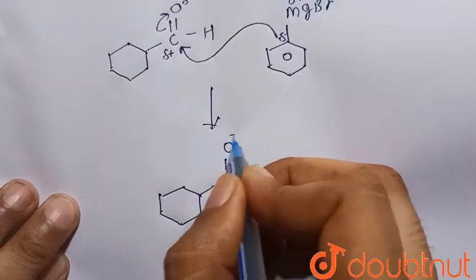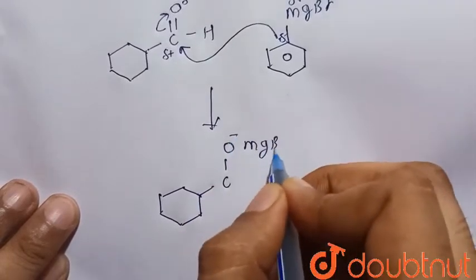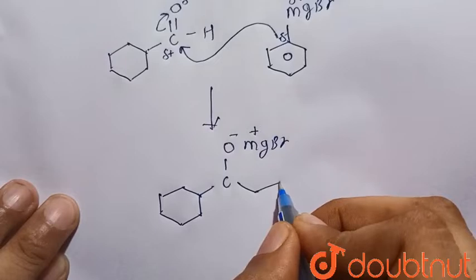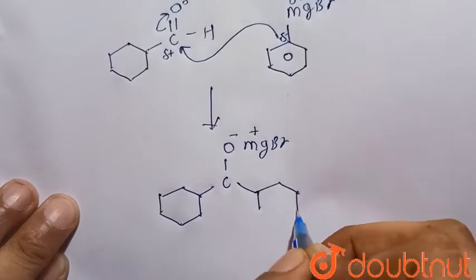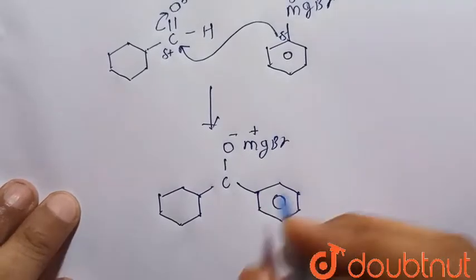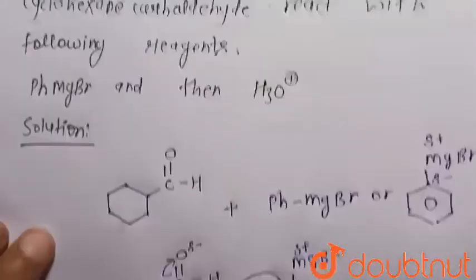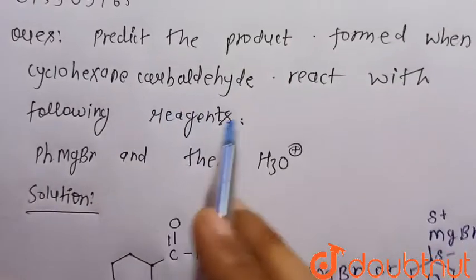That is CO minus and MgBr positive, and this is the phenyl. So now it is given in the question that cyclohexane carbaldehyde reacts with PhMgBr, that is Grignard reagent, and then it is treated with H3O+.